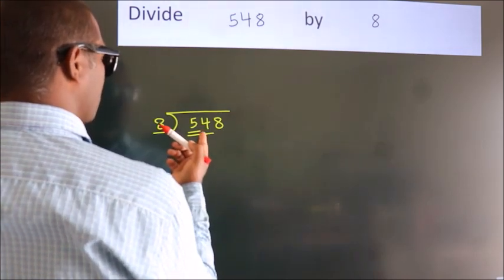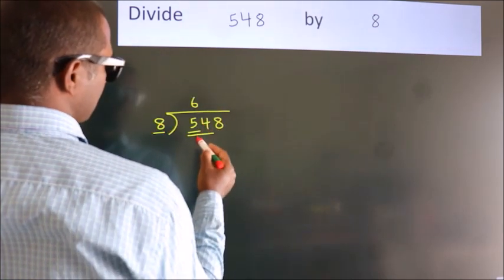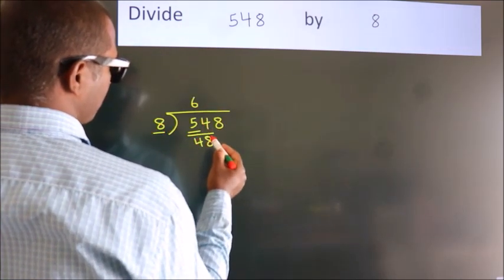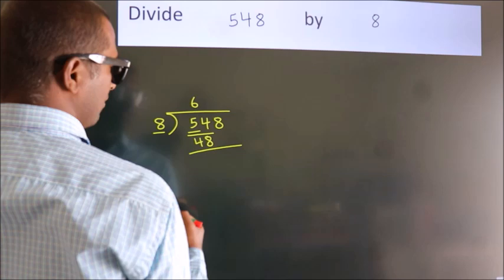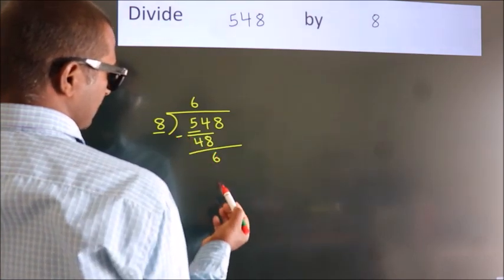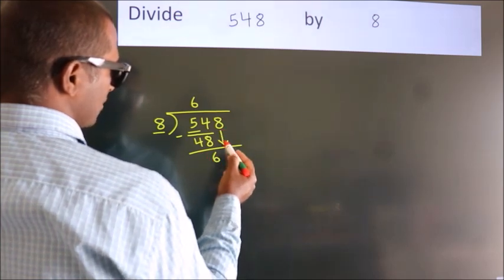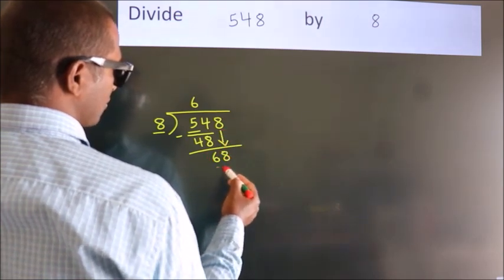A number close to 54 in 8 table is 8 times 6, 48. Now we should subtract. We get 6. After this, bring down the beside number. So, 8 down. So, 68.